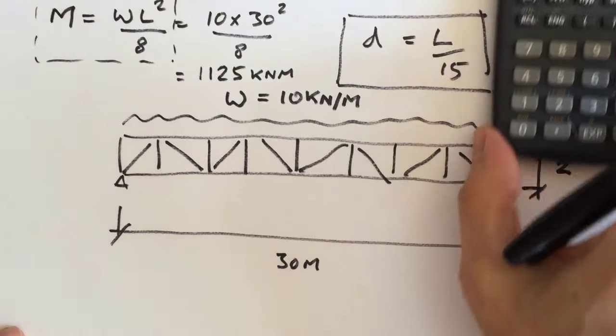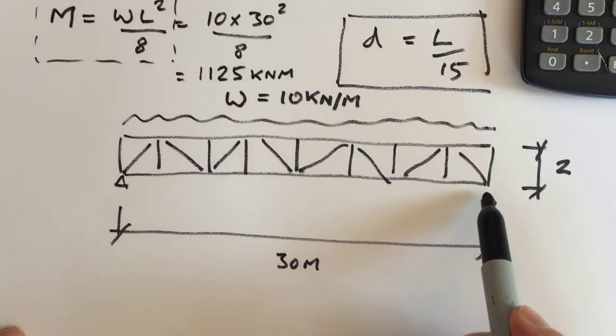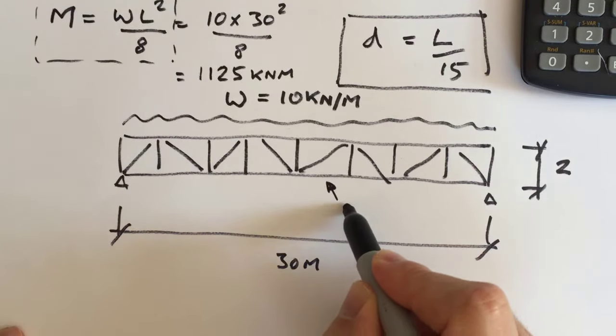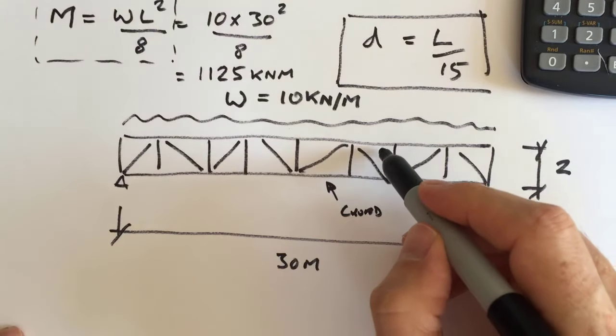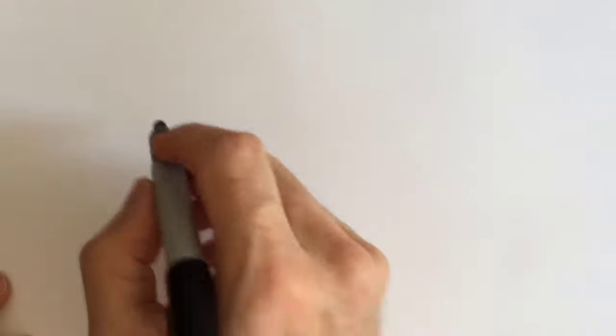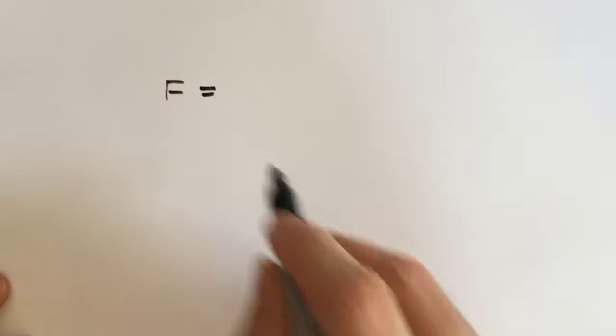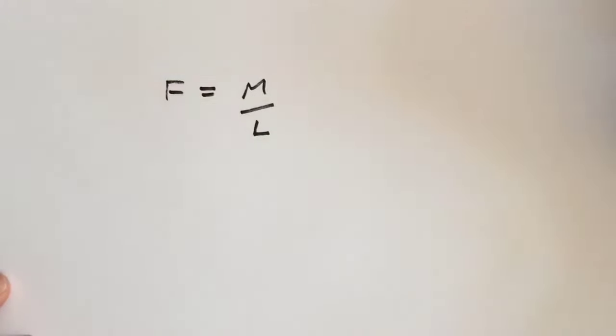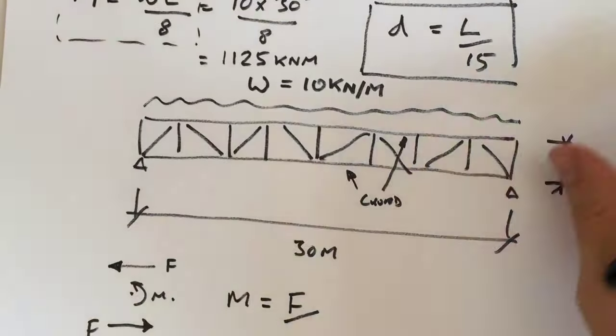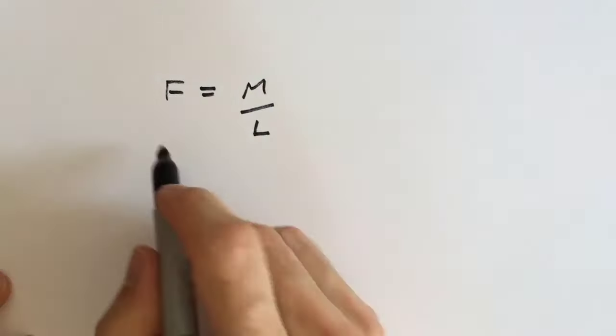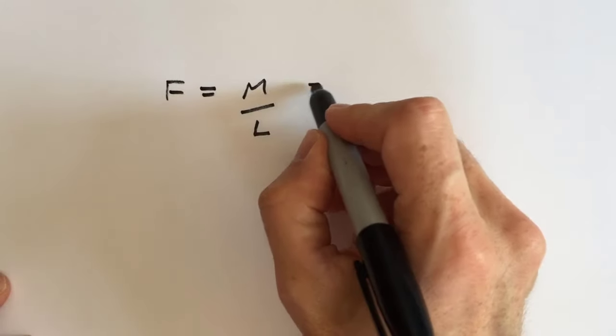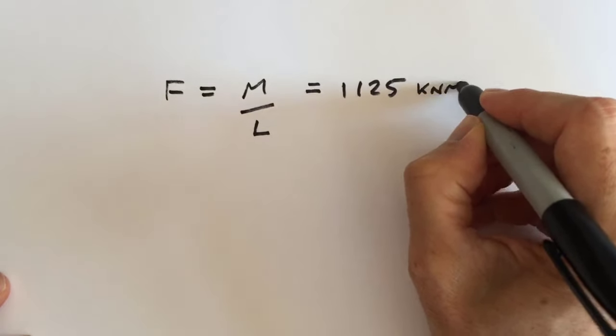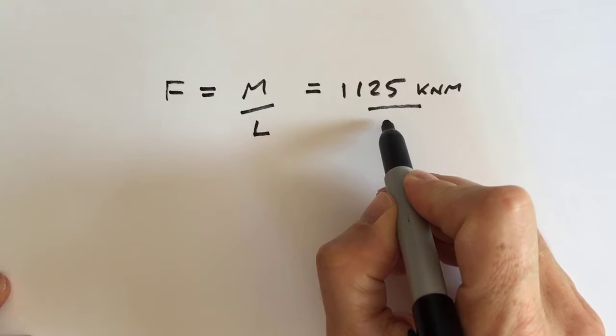The next formula that you need is to find out the axial load on the bottom chord and the top chord. So to find the force, we take our moment and divide it by the length between the two chords. So F equals M over L, which is equal to 1,125 kilonewton metres divided by 2.